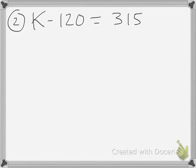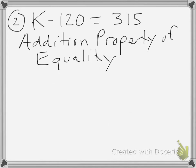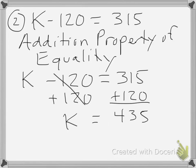Let's look at our second example: k minus 120 is equal to 315. This problem would be an example of the addition property of equality because you are performing the same operation — addition — on both sides of the equation in order to isolate the variable. When I add 120 to both sides, I can see that k is equal to 435. So there is an example of how to use the addition property of equality.